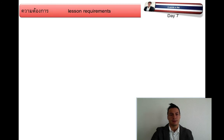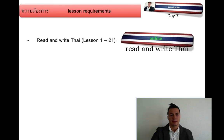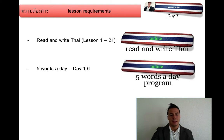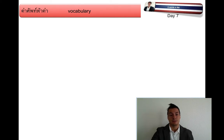Lesson requirements: Read and Write Thai 1 to 21 is what you need in order to understand and follow this lesson. You will also need to have learned lessons 1 to 6, going through the words belonging to those lessons in order to follow the structured sentences of lesson 7. Vocabulary for today is...